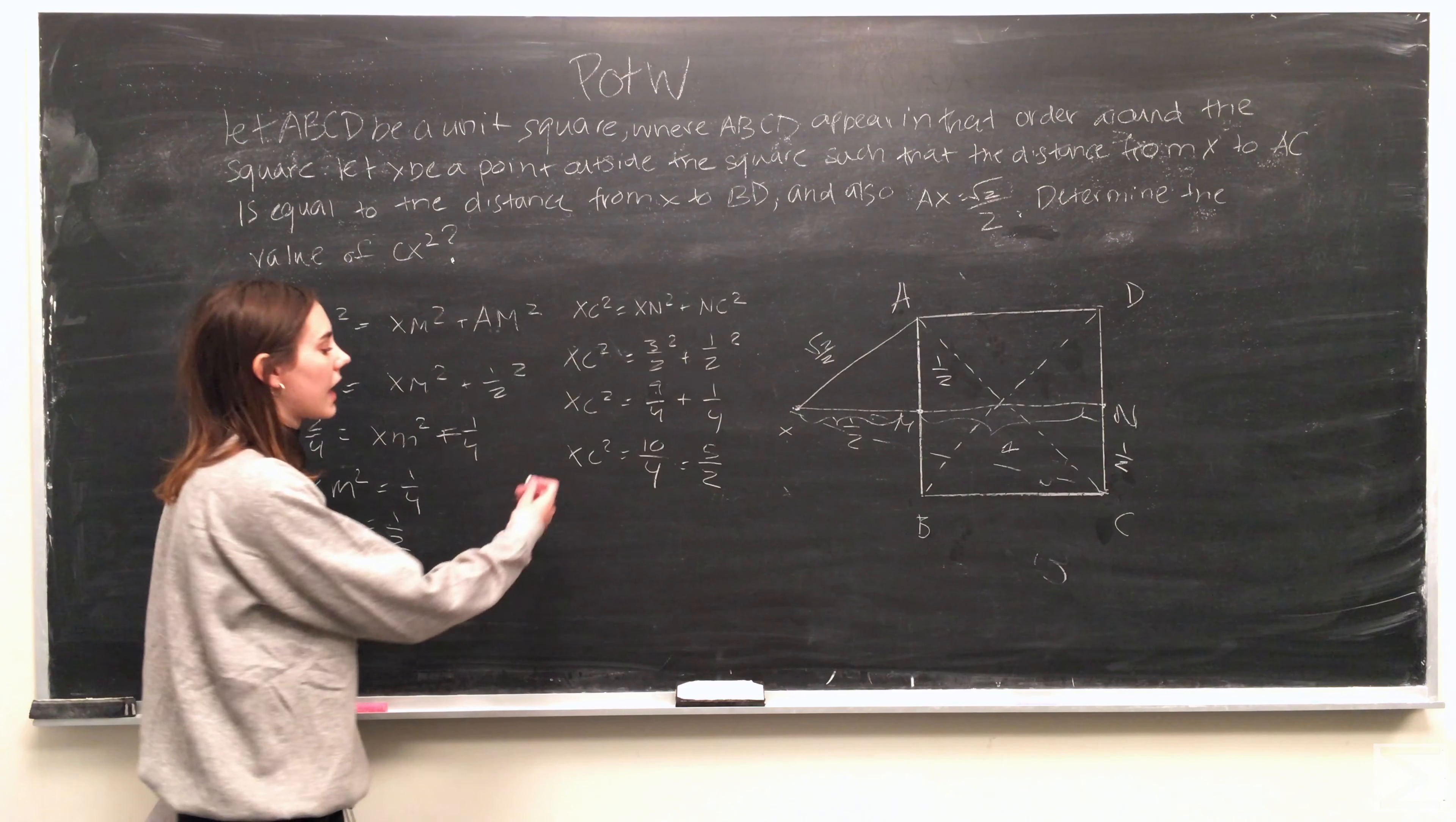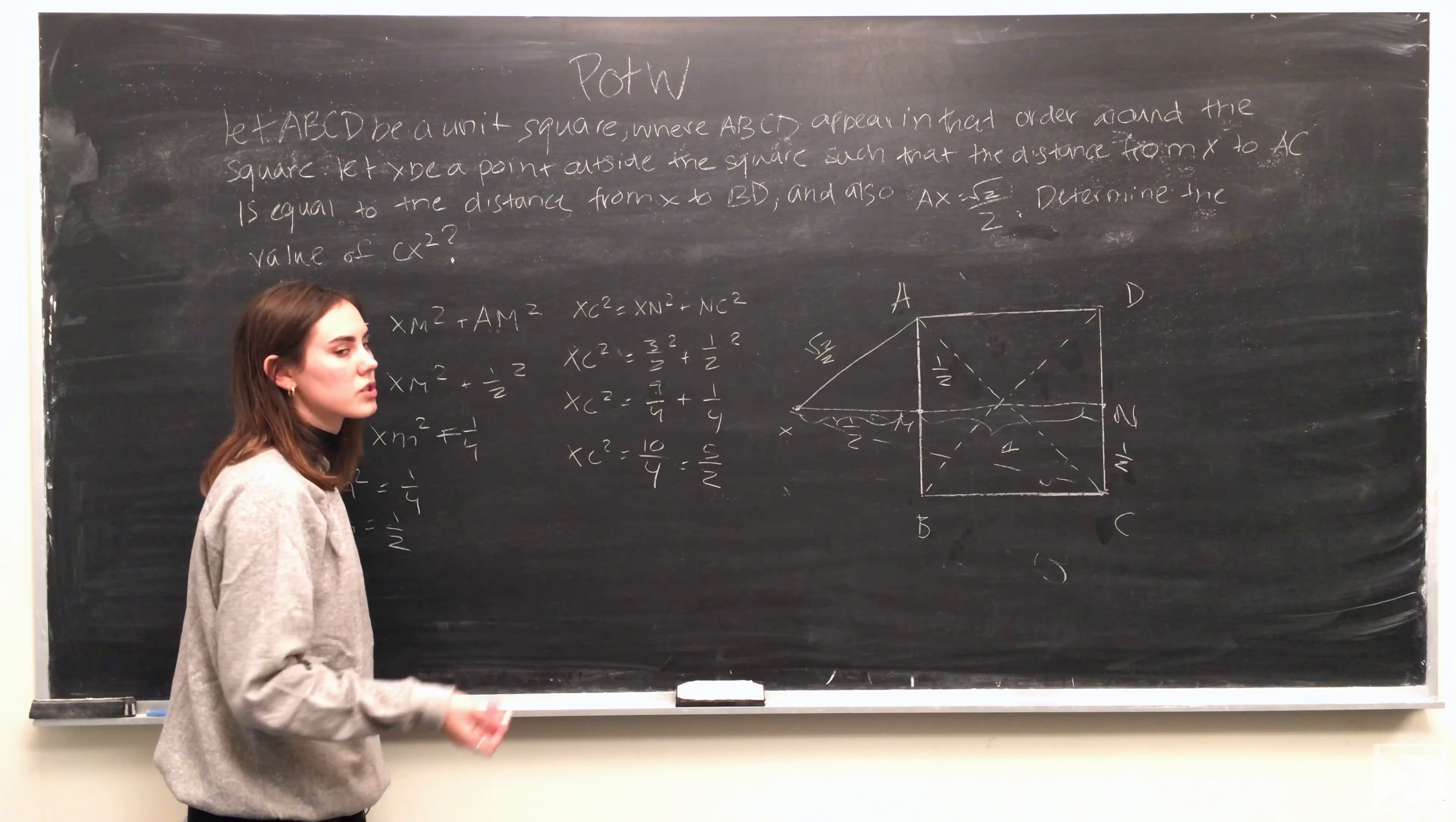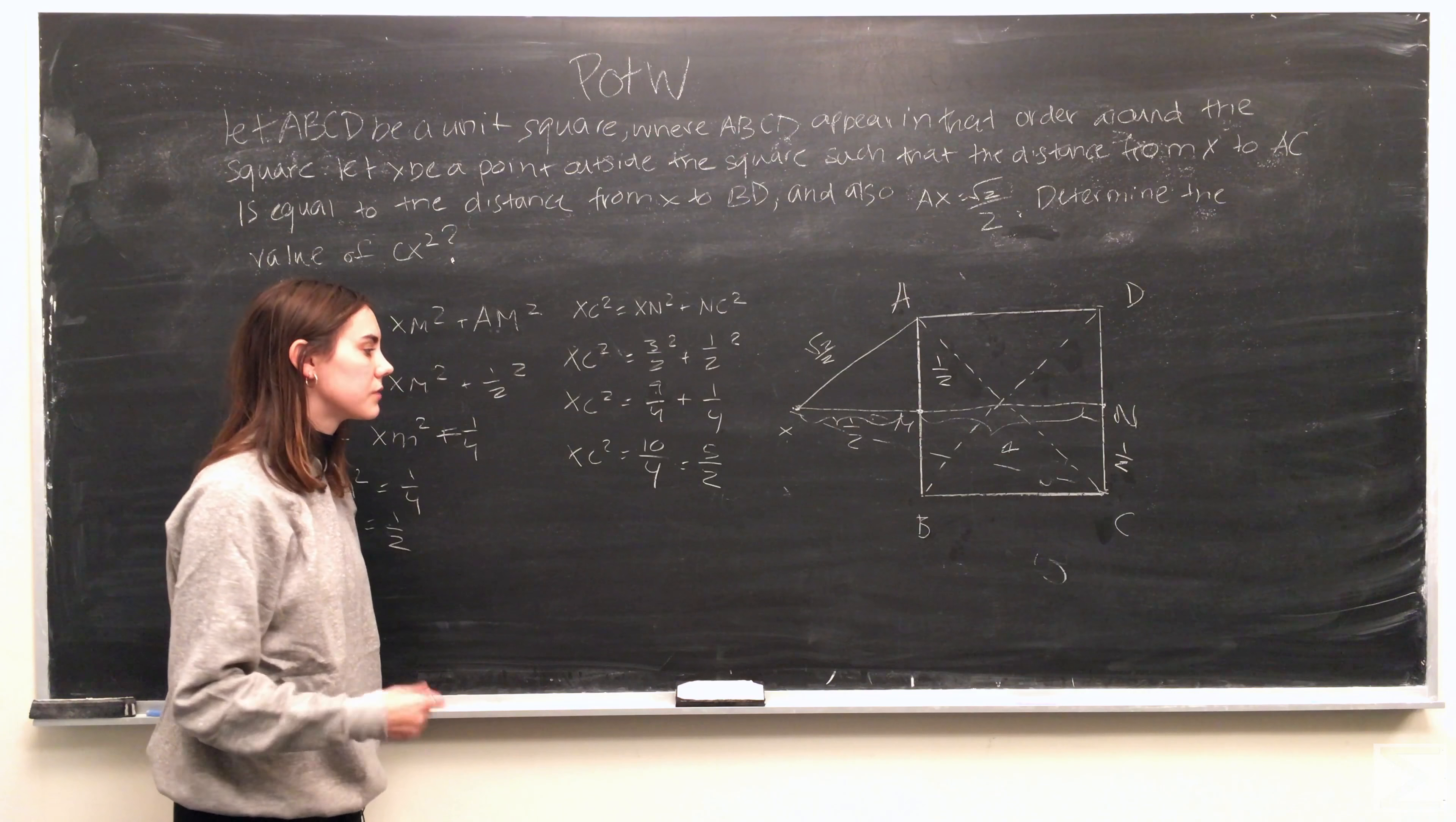So plugging in 3 over 2 and 1 half for xn and nc respectively, what we end up with is that xc squared is equal to 10 over 4, which simplified is just 5 over 2.